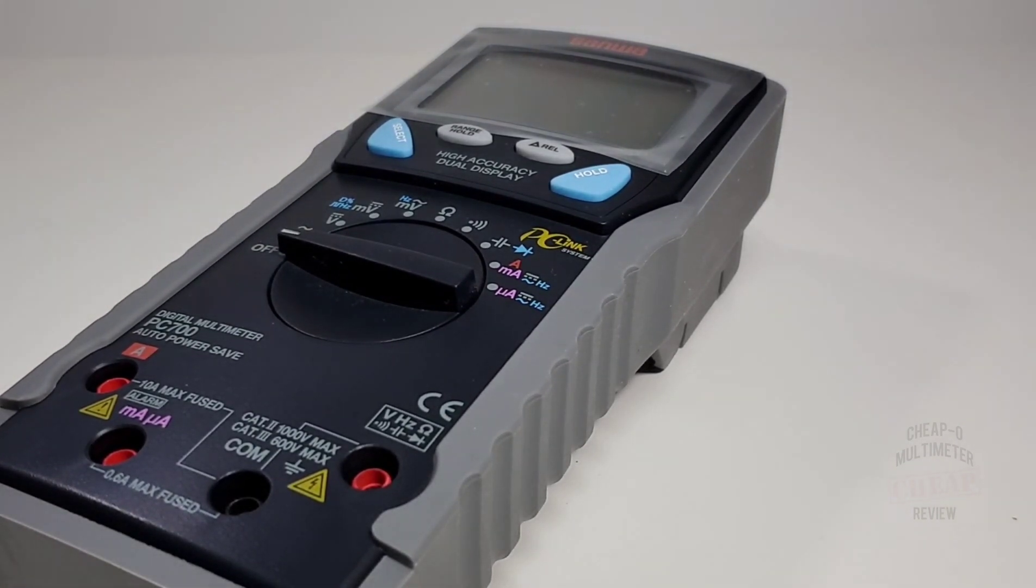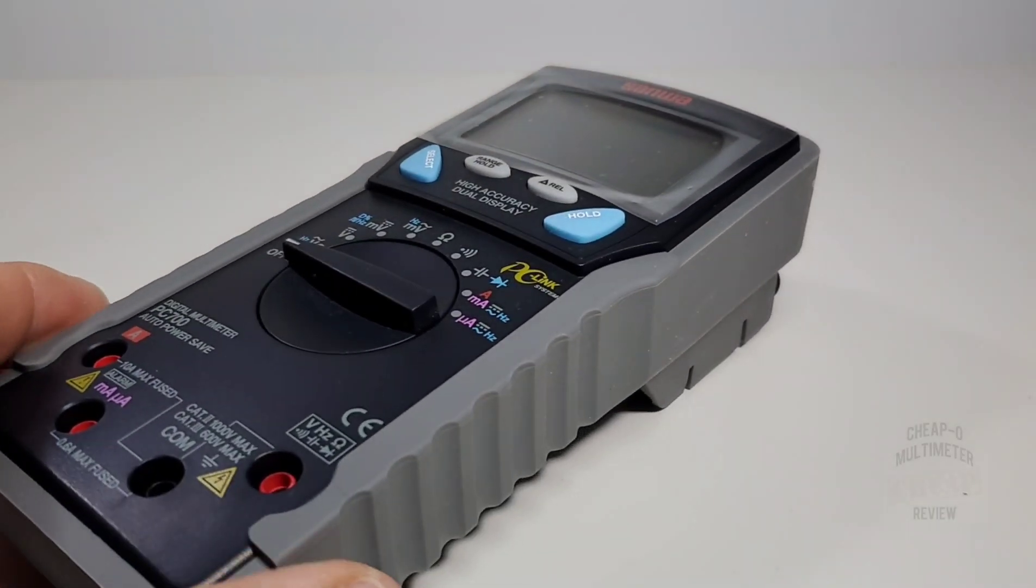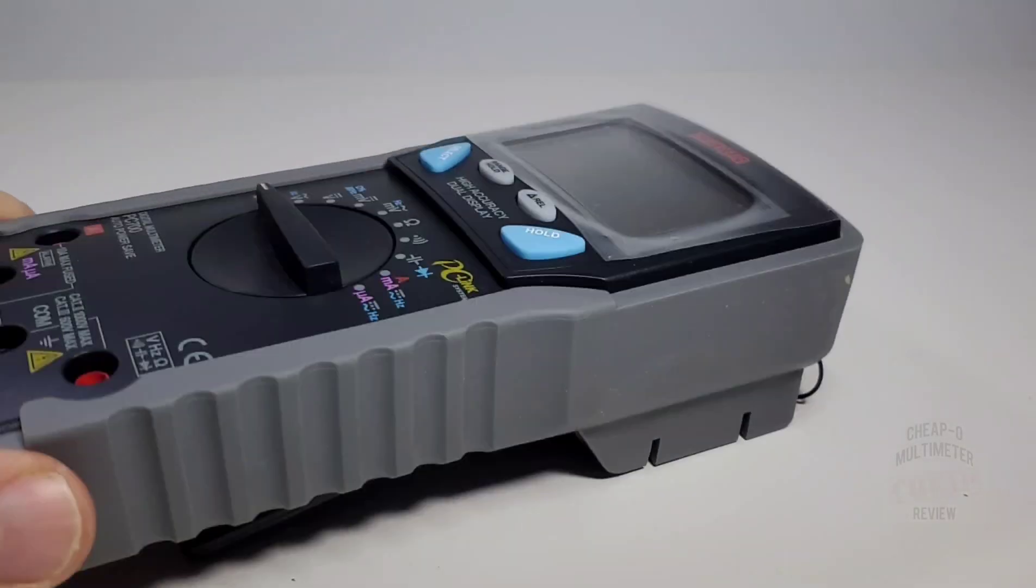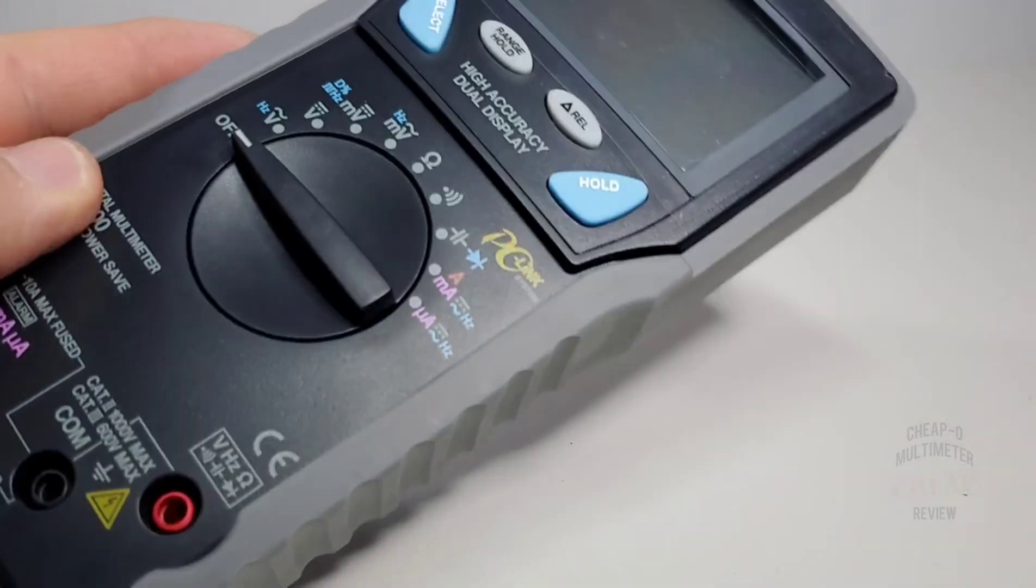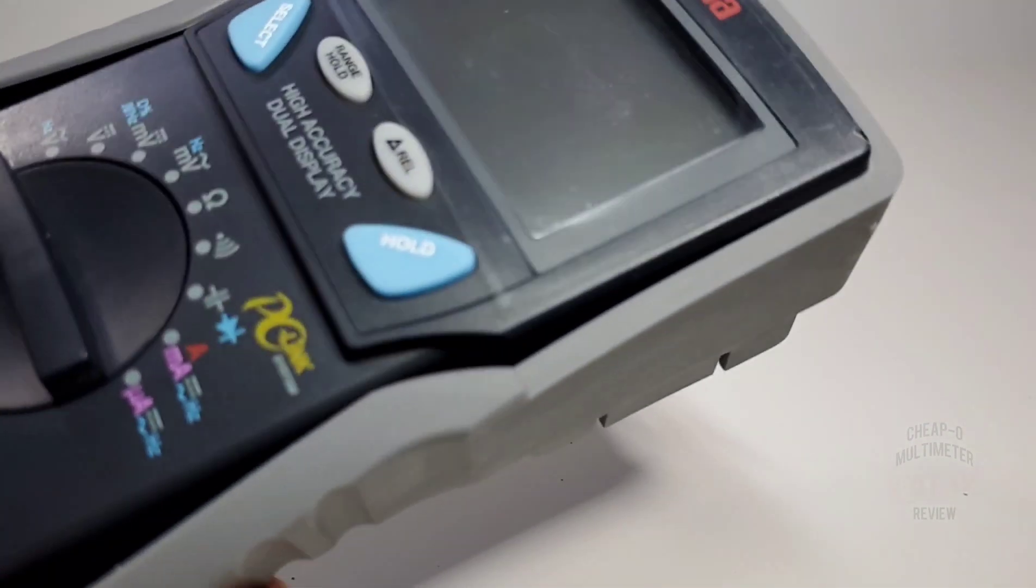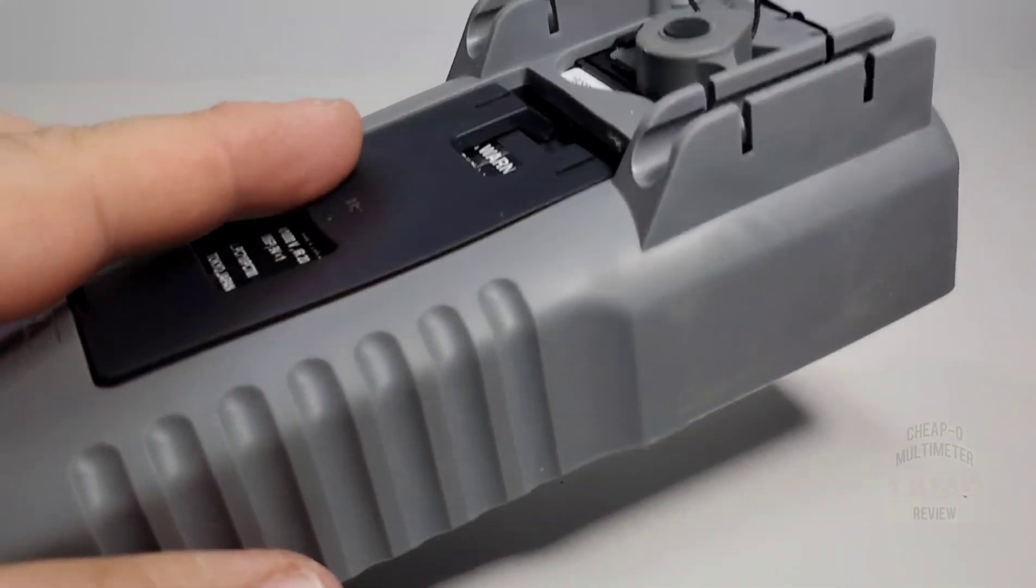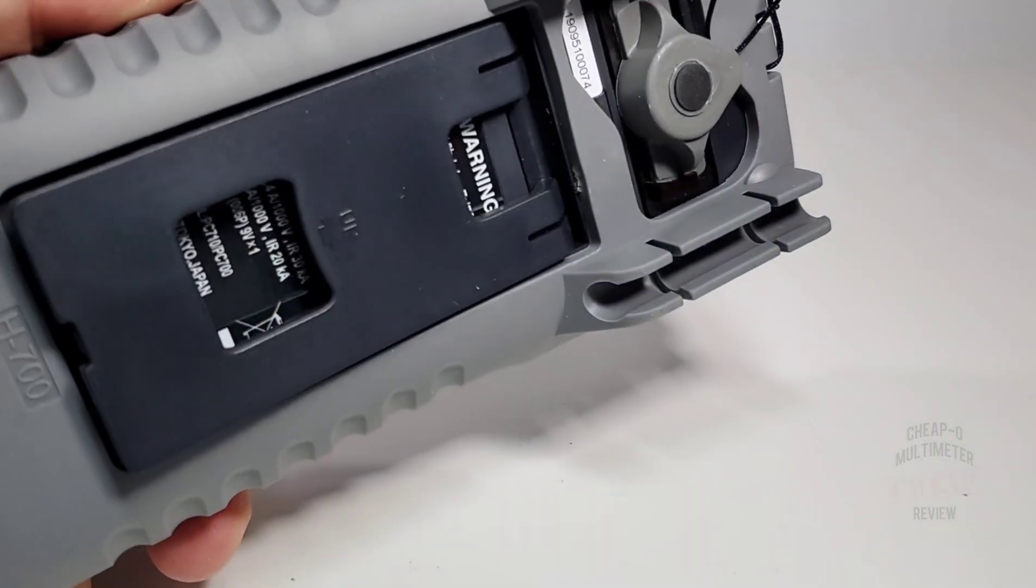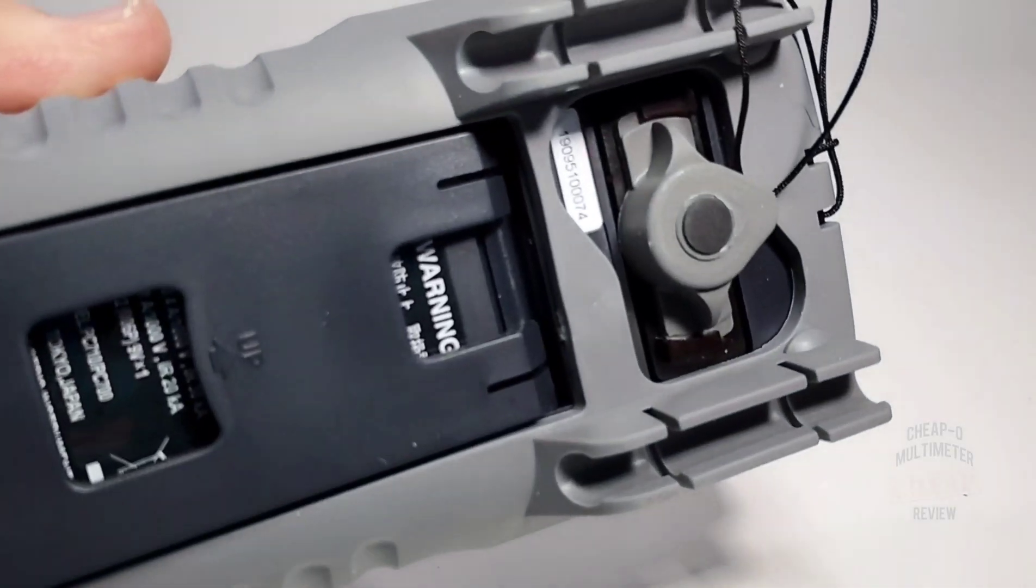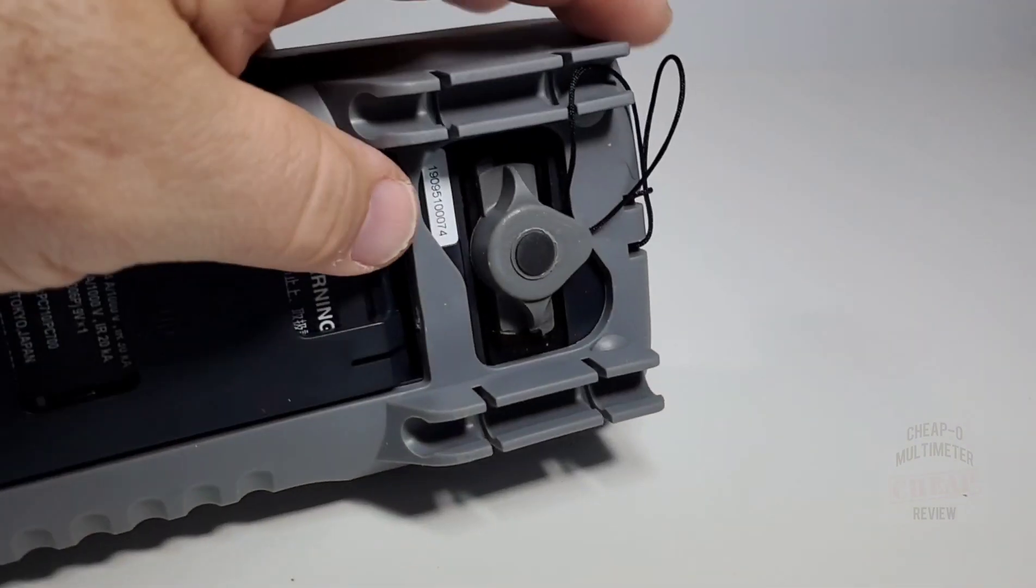Fit and finish, as with every Sanwa I've ever reviewed, is second to none. Just screams quality, excellent ergonomics. You have a really nice holster case here which will come off. Quite a heavy meter, definitely more on the heavy than the light side, really solid. You do have that magnetic hanging strip so if you want to put it up somewhere to a metal wall or an electrical panel, it'll certainly hang. It's a strong magnet, meter's not going anywhere.